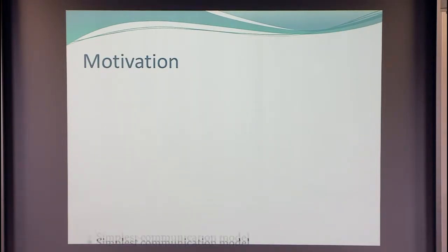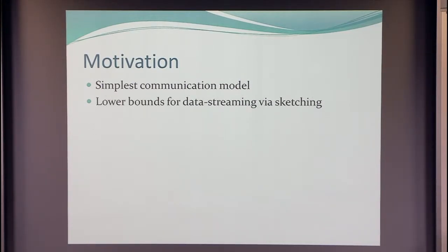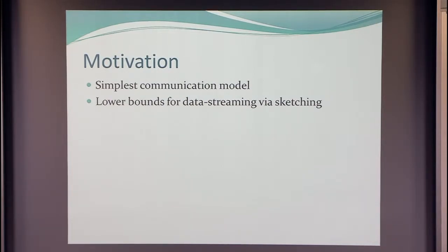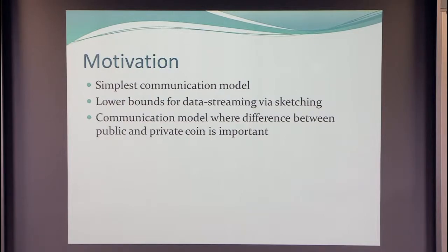The motivation — this is maybe the simplest communication model you can investigate, and the one with the highest lower bounds, actually. There is another motivation: you can use this to give lower bounds for data streaming algorithms that work via linear sketching. There's a result that, in some sense, you can assume without loss of generality that you're using linear sketches, although this works for the public coin version of this model.